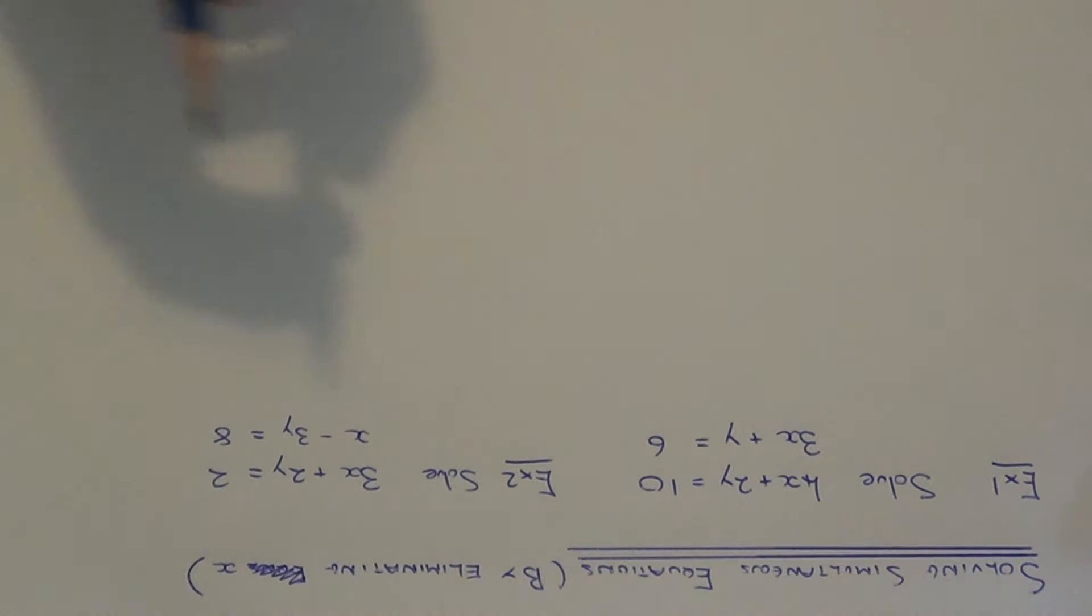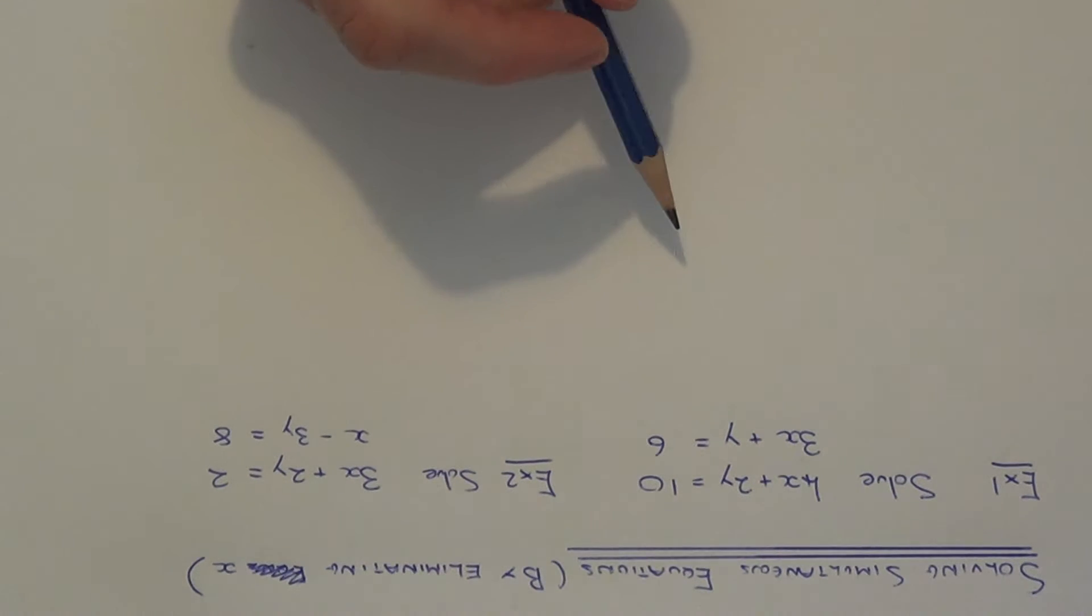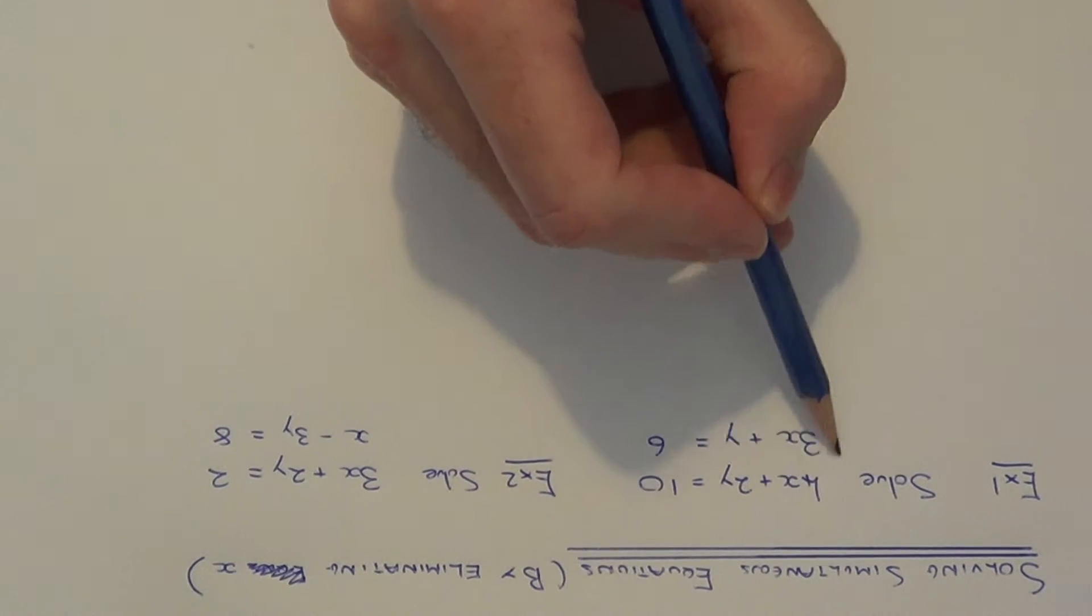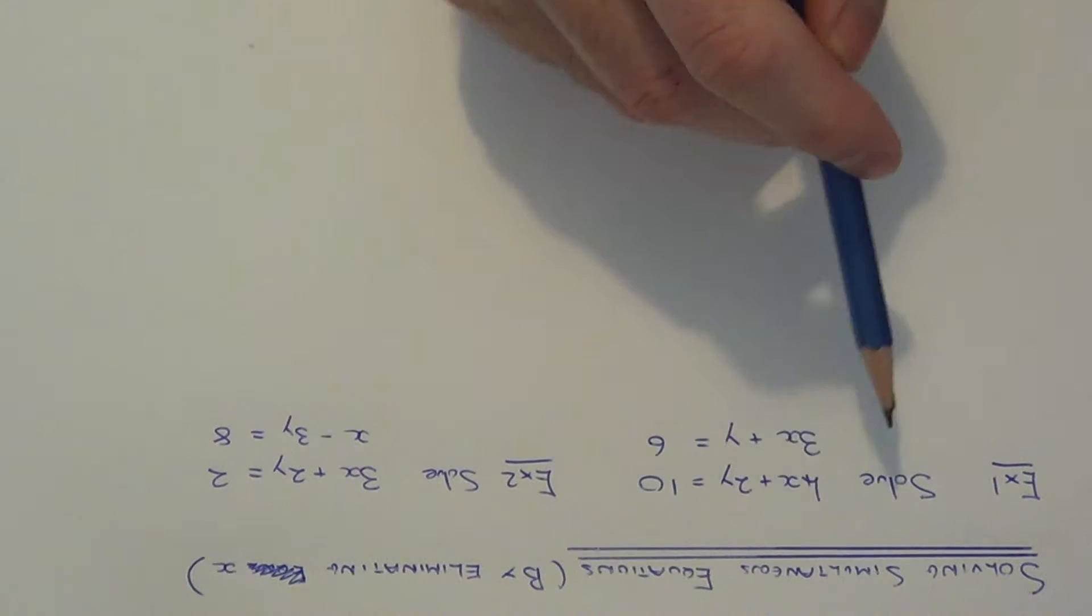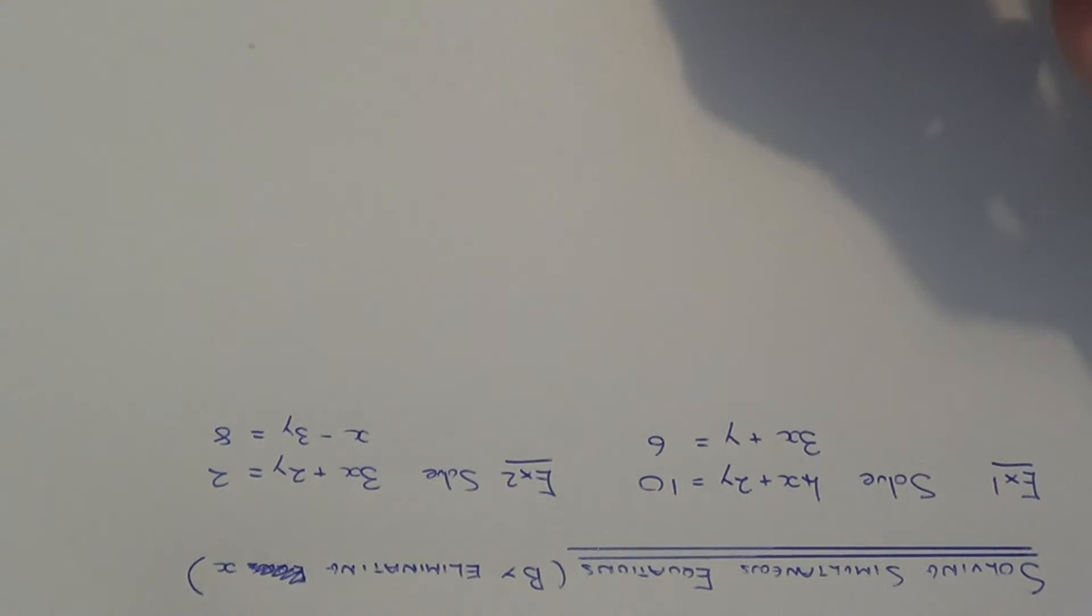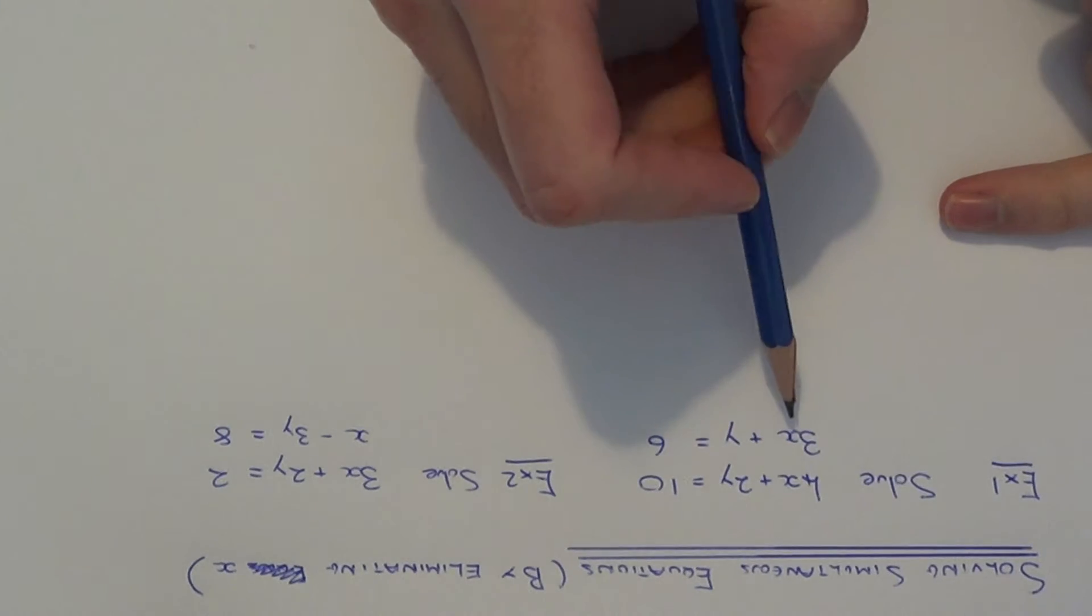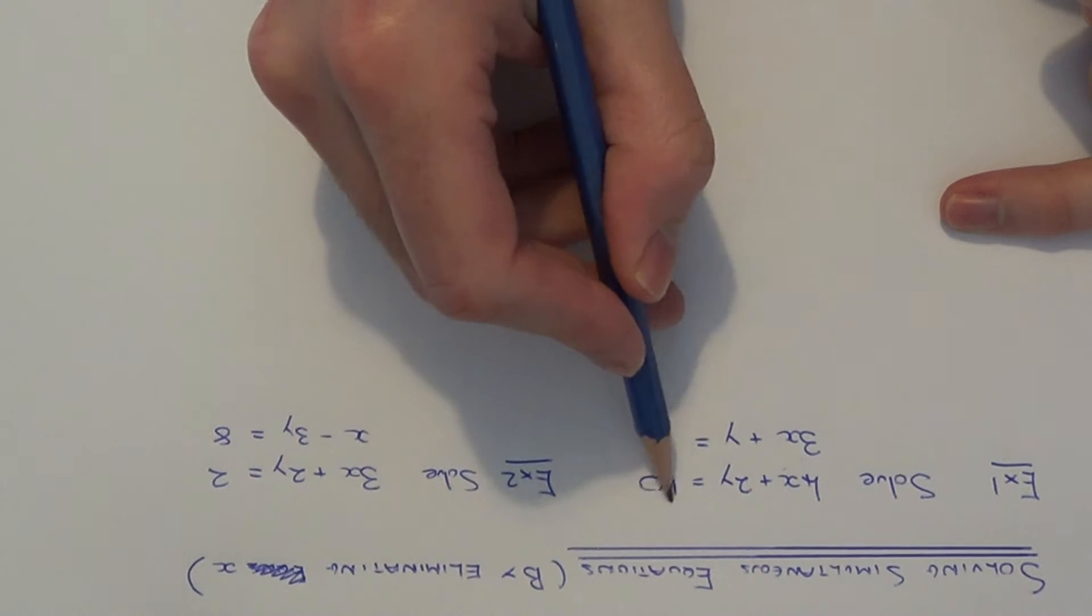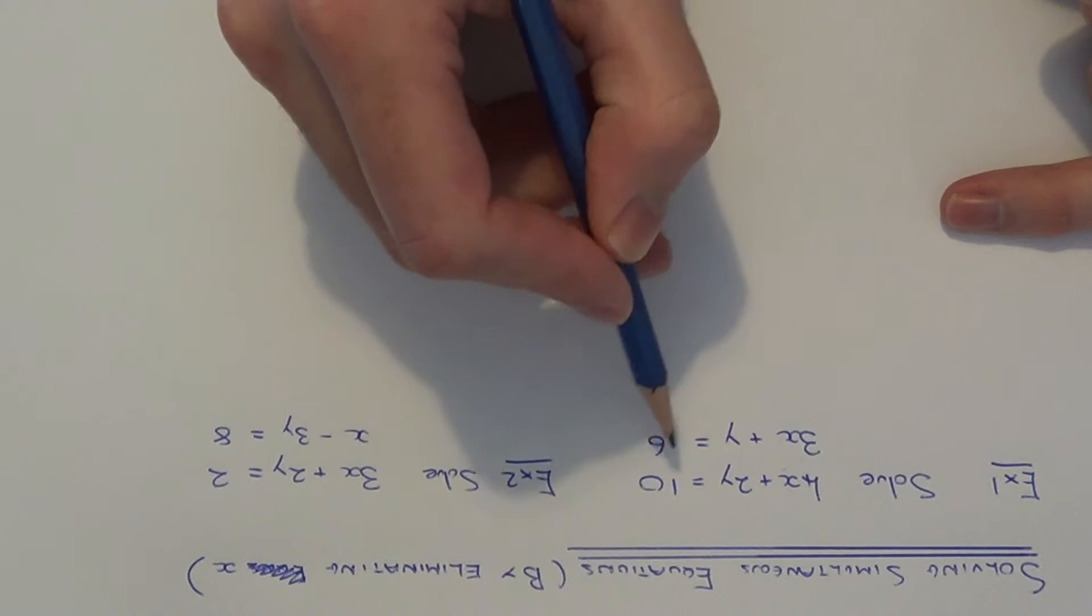Hi, today I'm going to show you how to solve a pair of simultaneous equations by eliminating the x values. Just to recap, if you're asked to solve simultaneous equations, you need to work out the values of x and y that give you the numbers in both equations.